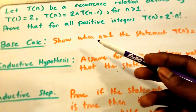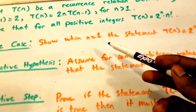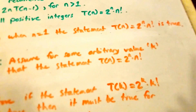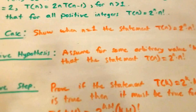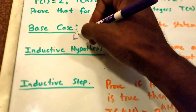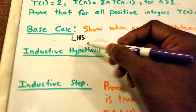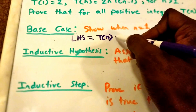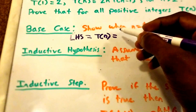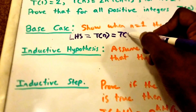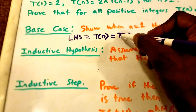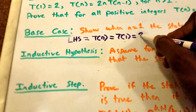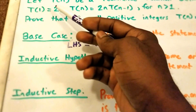For our base case, we want to show when n equals 1 that the statement T of n equals 2 to the power of n times n factorial is true. I'm going to use LHS — that stands for left-hand side — and this is going to equal our T of n. When n equals 1, our T function is equal to 2, as given in the problem statement.